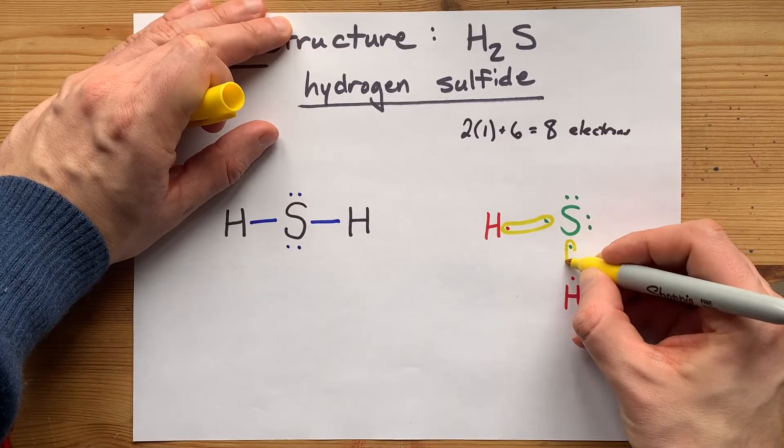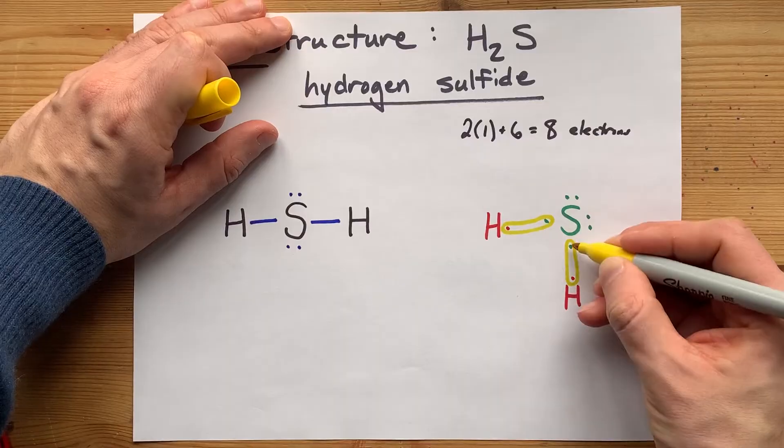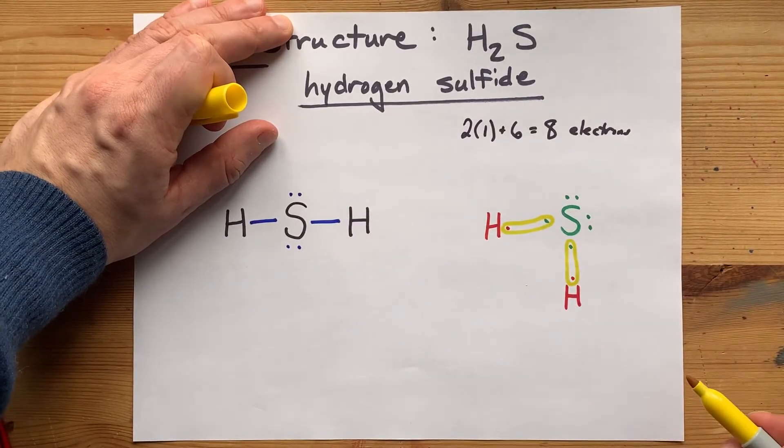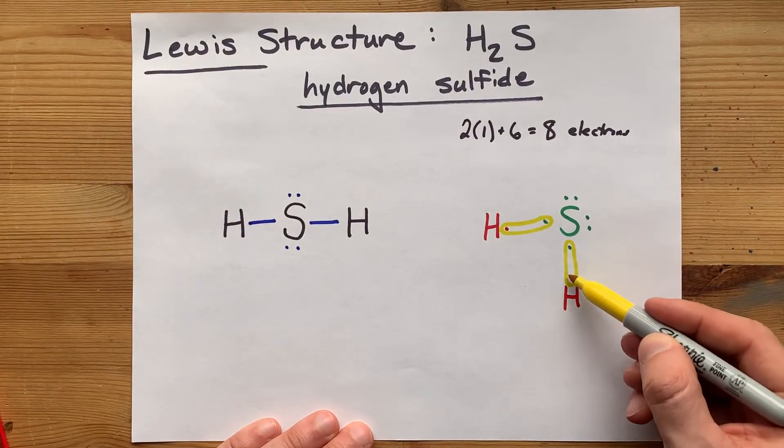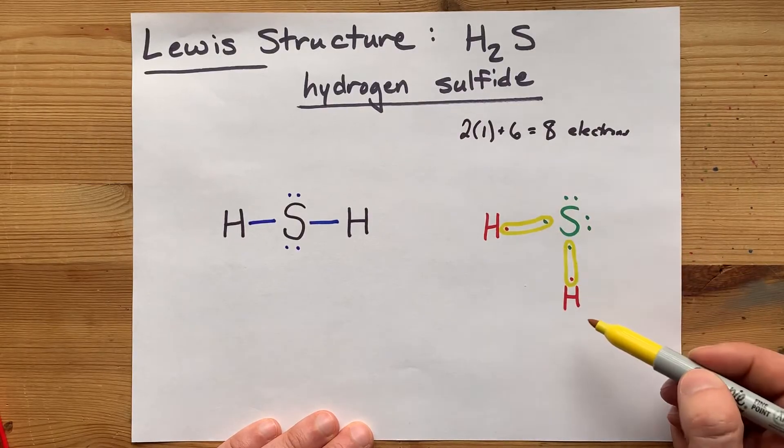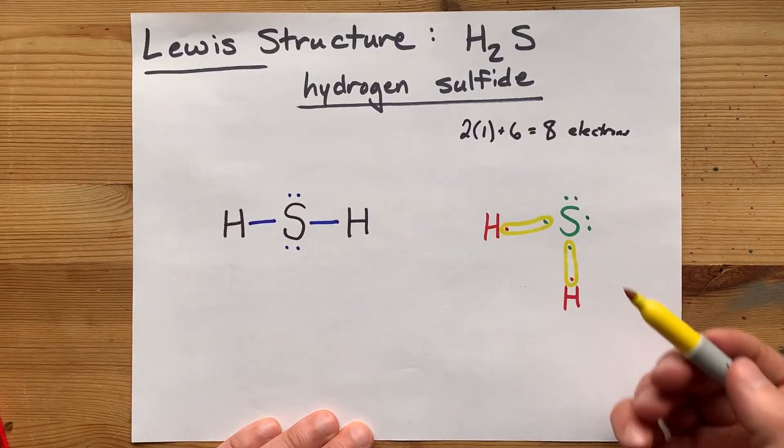This electron from sulfur pairs up with this one from hydrogen. Those two are now shared between the two atoms. And that makes this bonding pair here. This sharing of electrons, which gives hydrogen two and simultaneously sulfur eight total, is what the sharing of electrons or covalent bonding is all about.